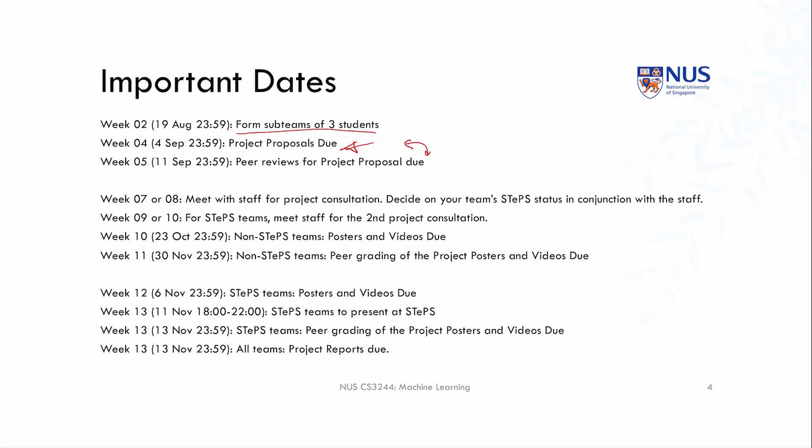With project proposals you'll also do peer reviews. Peer reviews are a really important part of this course because machine learning students need to be able to communicate what they've done to others. You'll do this at least twice — once with the project proposal and again with the three deliverables later. After the first exam, you'll meet with us for the initial project consultation and decide whether you want to participate in the public showcase or not. Either way, you'll have a poster and a non-technical video as core deliverables.